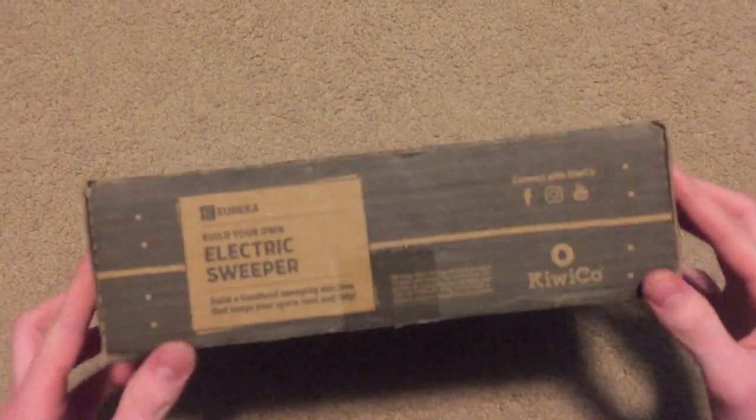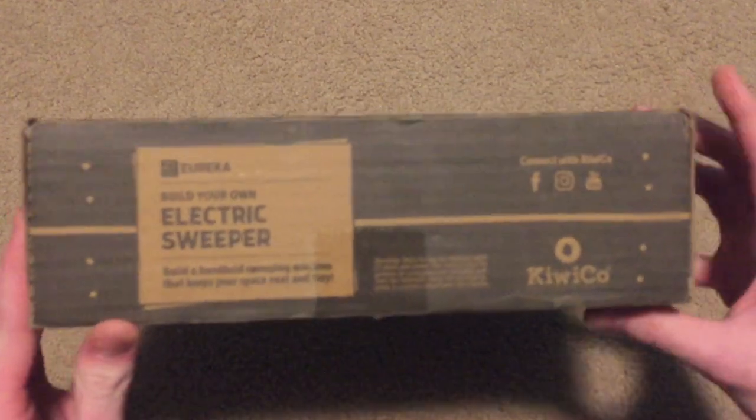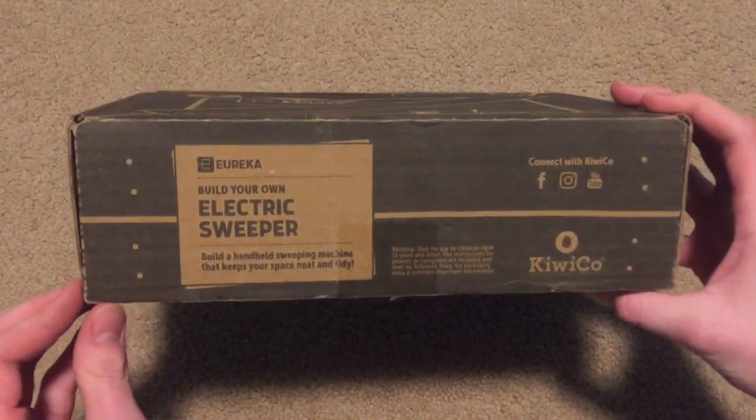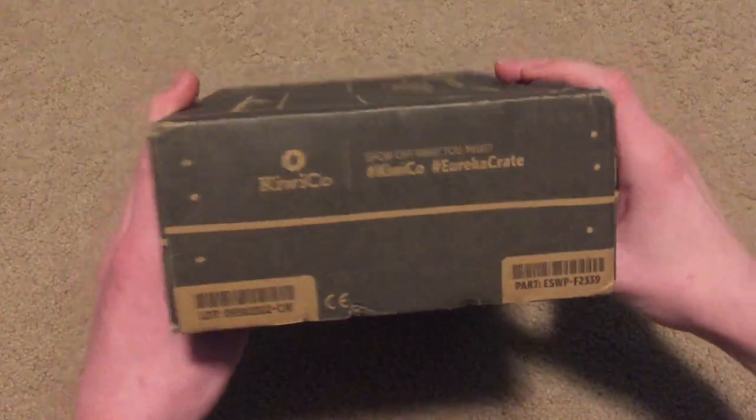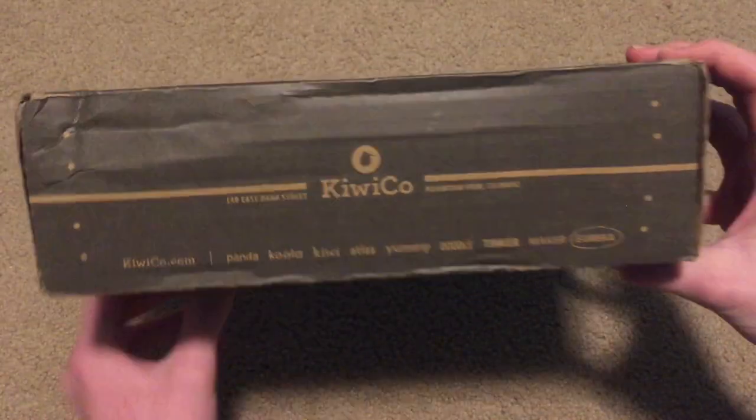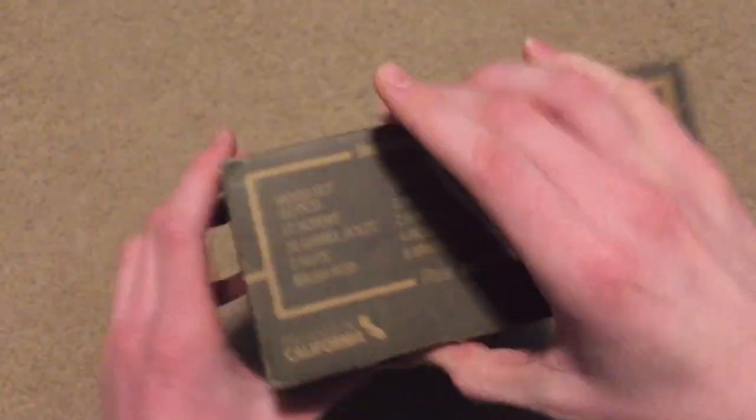So if we look at the box, you can see 'build a handheld sweeping machine that keeps your space neat and tidy.' The side just has some stuff on it, and then the side has all the crates you can buy and there's their website KiwiCo.com, and here is the list of parts.